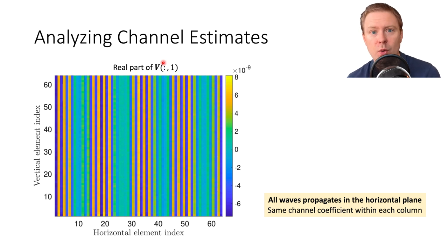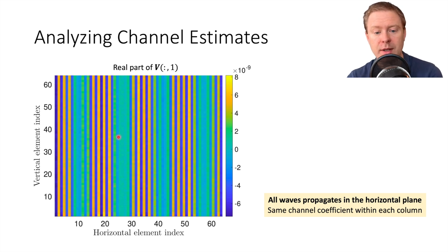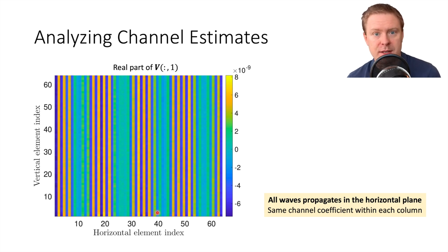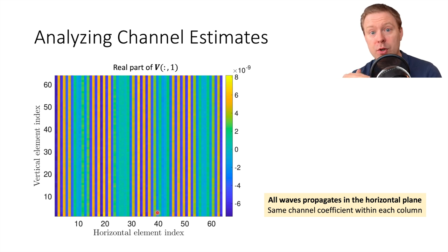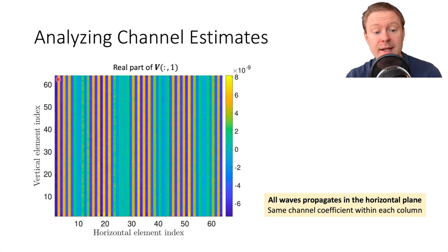Analyzing that channel estimate in particular — taking out the first column, a length-4096 vector — even without knowing there was a 64 by 64 array, you can see patterns. If elements are ordered row by row, within each column of the array the channel estimates are essentially the same value. The physical explanation is that all radio waves in this channel model come in through the same horizontal plane, so elements at different vertical heights are hit the same way by the incoming plane wave. We can exploit this to use the same channel coefficient within each column.